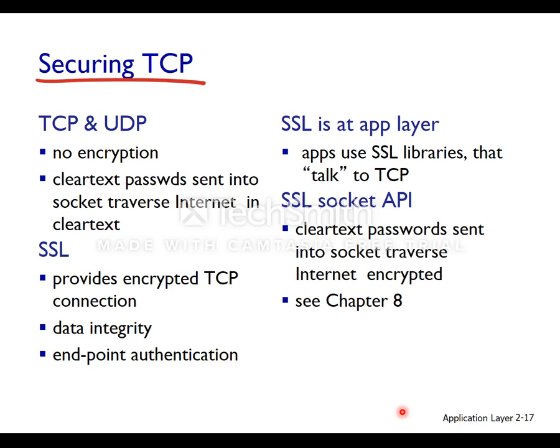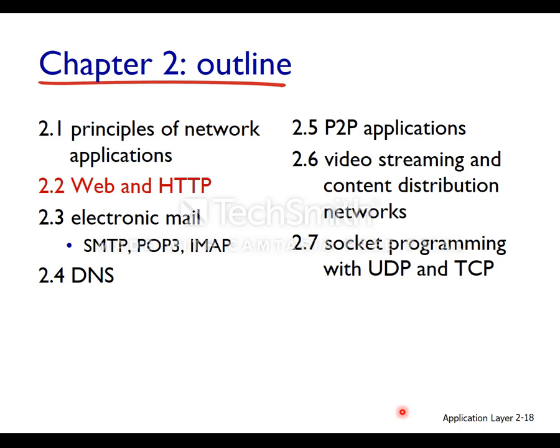SSL — the Secure Sockets Layer — provides an encrypted TCP connection, data integrity, and endpoint authentication. SSL is an application layer protocol; applications talk to SSL libraries which in turn talk to TCP. The SSL socket API ensures that clear text passwords sent into the socket will traverse the internet encrypted. We'll touch on security requirements for TCP in videos closer to the latter third of this course. In the next video, we're going to look at the web and HTTP.